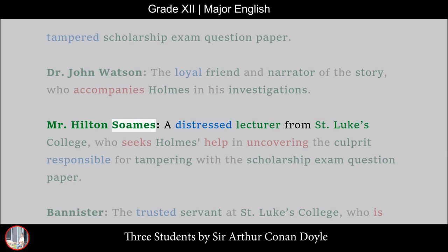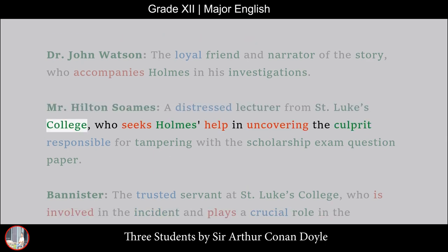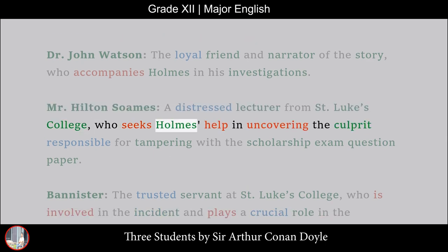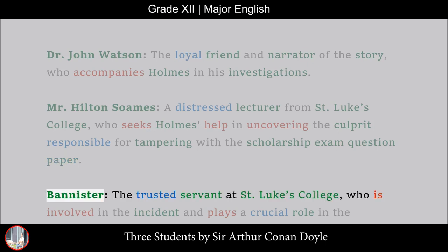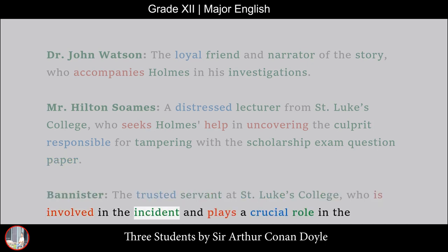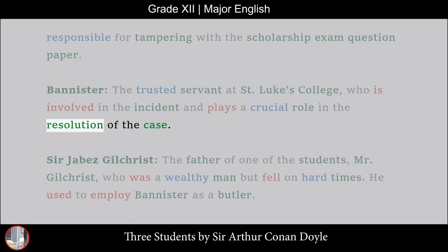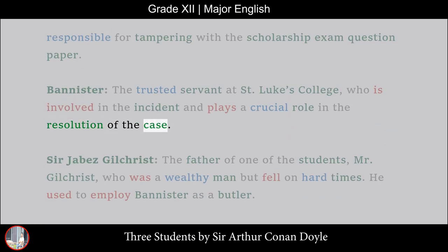Mr. Hilton Soames, a distressed lecturer from St. Luke's College, who seeks Holmes' help in uncovering the culprit responsible for tampering with the scholarship exam question paper. Bannister, the trusted servant at St. Luke's College, who is involved in the incident and plays a crucial role in the resolution of the case.